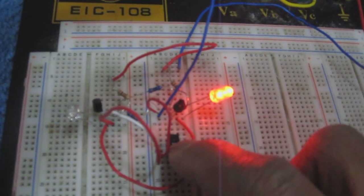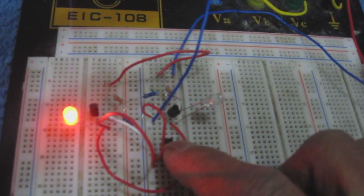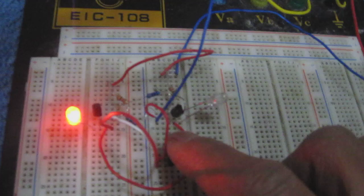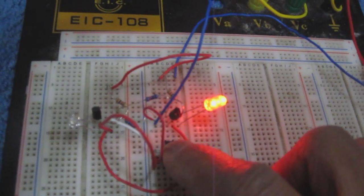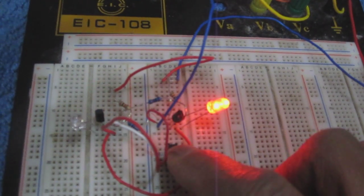And if we move it again to the other side, each LED switches to the opposite logic state. This keeps happening over and over as I toggle the switch.